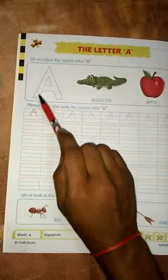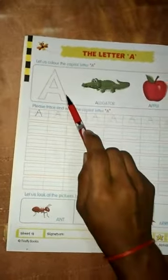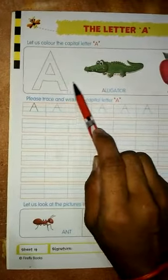This is A. What is this? This is A. A says A. A says A.